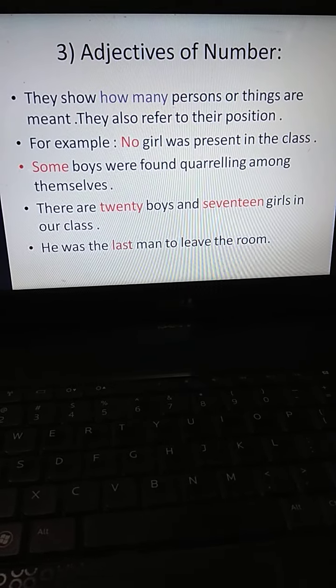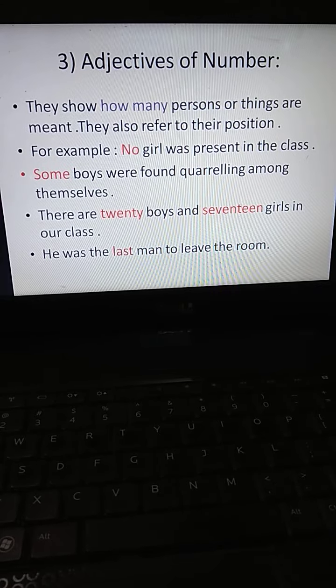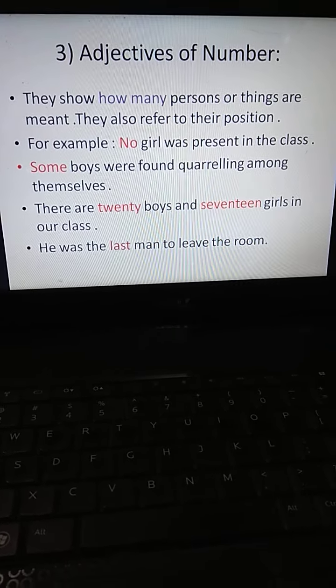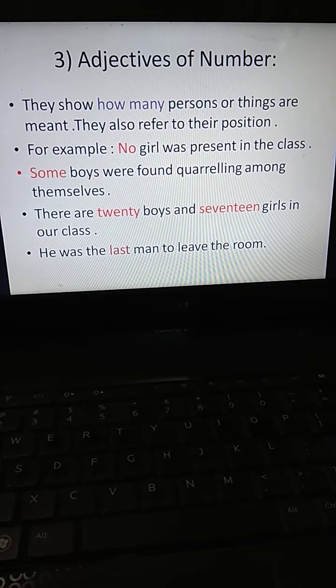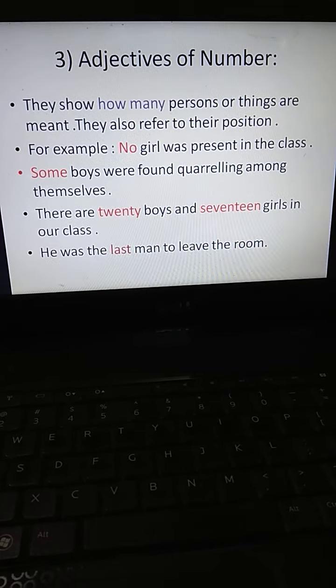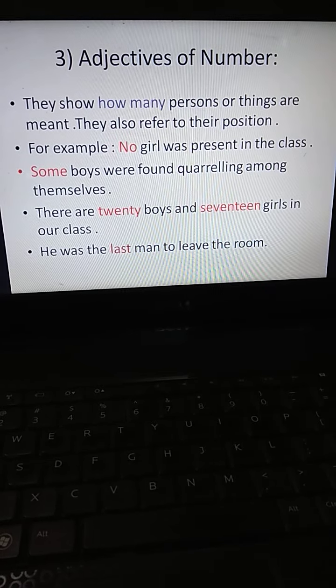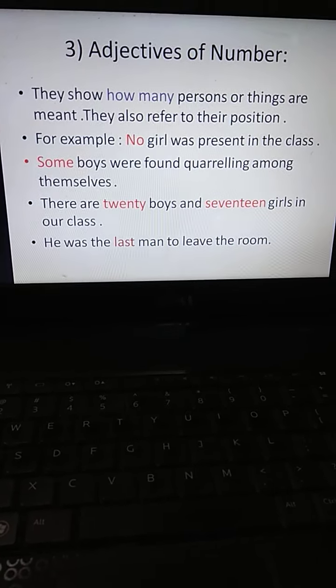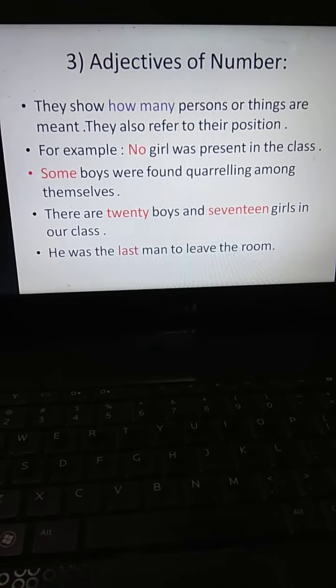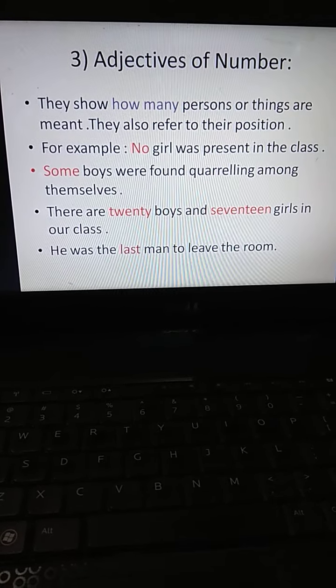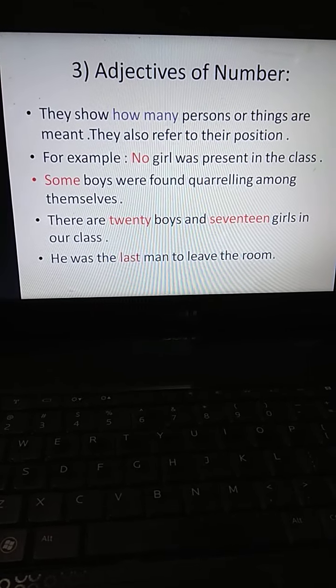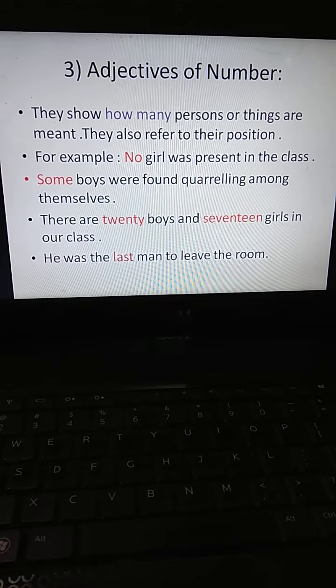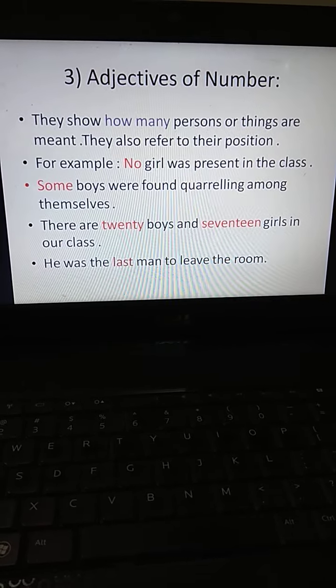Adjectives of number show how many persons or things are meant. They also refer to their position. For example: No girl was present in the class. Some boys were found quarreling among themselves. There are 20 boys and 17 girls in our class. He was the last man to leave the home. Countable nouns such as pen, coin, boy, ear, etc. can be expressed in numbers or shown in what positions they are placed. Adjectives of number answer how many or in what order.